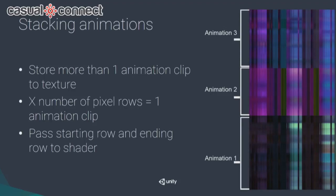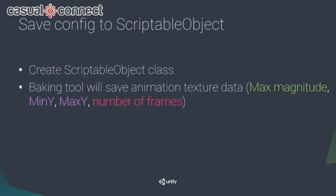Of course, if you're only baking one animation to a texture, you may have a lot of wasted space. You could stack multiple animations onto one texture. You can also save settings like min, max, and max magnitude values into a scriptable object.